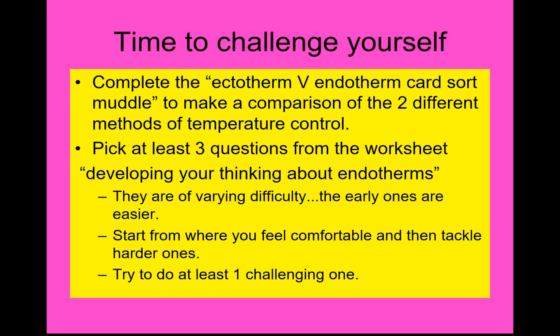Now you've got two tasks — two worksheets. One is an ectotherm versus endotherm matching activity: it's all muddled up in a Word document, and you need to move the words around to make a nice comparison table with statements that go next to each other. Then there's a worksheet with a range of ranked questions of varying difficulty. Have a go at at least three of them, including at least one challenging one. Try to pick a range — if one looks similar to a previous question, choose something different. Thank you.